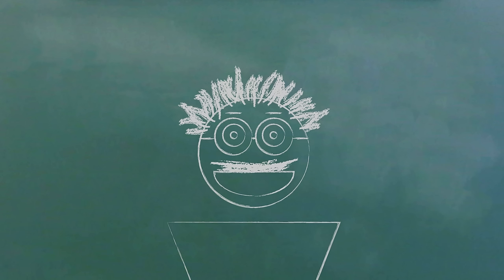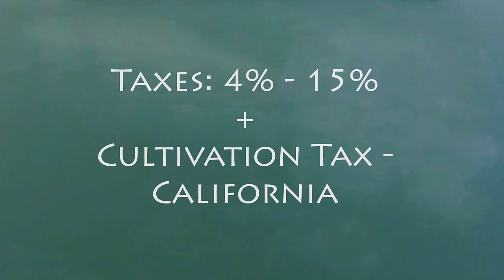First, we'll talk about California, Maine, Massachusetts, and Nevada, because they all completely legalized marijuana for adults. All of them added taxes ranging from about 4% to 15%, and some states also applied the sales tax to marijuana.